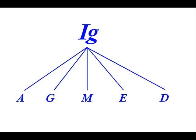You can also find it in secretions from the genitourinary tract, the gastrointestinal tract, the prostate, and respiratory epithelium. It can also be found in really small amounts in blood.